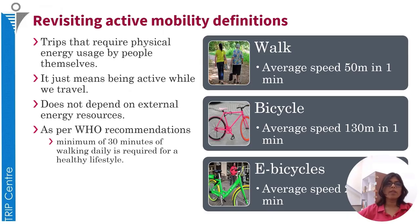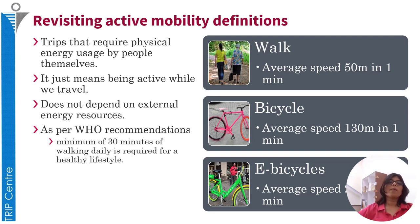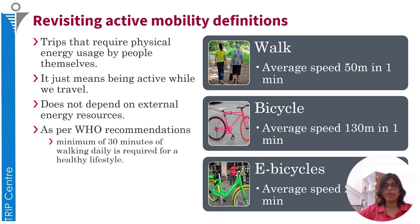Let us first try and understand what we mean by active mobility. These are essentially those trips that require physical energy usage by the people themselves. These modes, for example, include walking, bicycling, and even pedal-assisted bicycles. Depending on the cities and the policy adopted, other modes such as cycle rickshaws and skateboards can also be included.